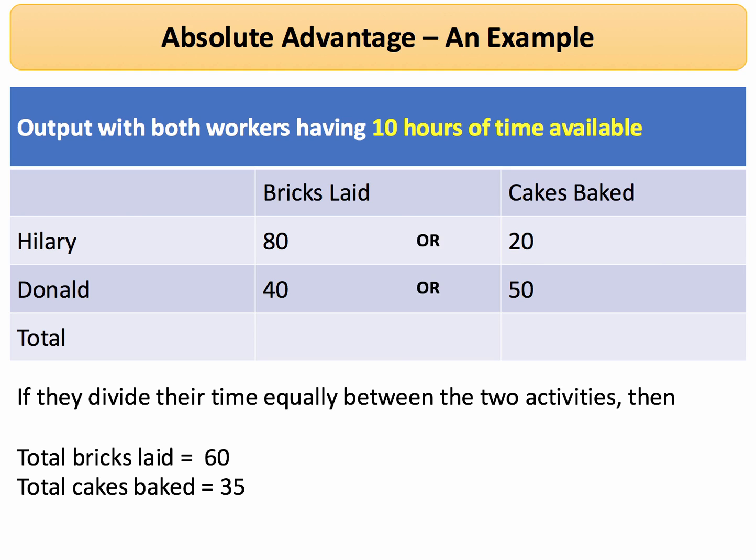So if they divide their time equally between the two activities, Hillary lays 40 bricks and bakes 10 cakes. Donald lays 20 bricks and makes 25 cakes. In total, we could have 60 bricks laid and 35 cakes baked if both workers allocated five hours to each activity.